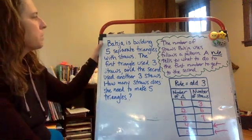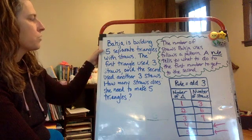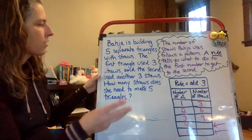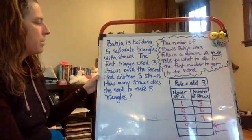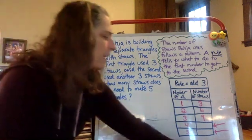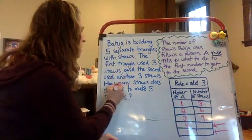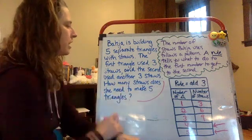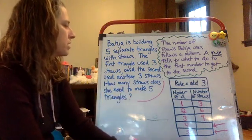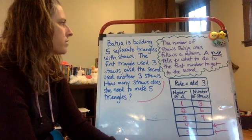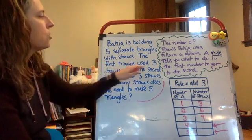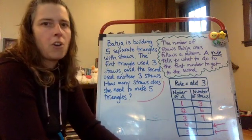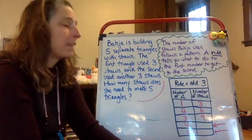So let's read it again. Baja is building five separate triangles with straws. The first triangle used three straws and the second used another three straws. How many straws does she need to make five triangles? We're looking for how many straws she needs to make five triangles, and we know that each triangle uses three straws.